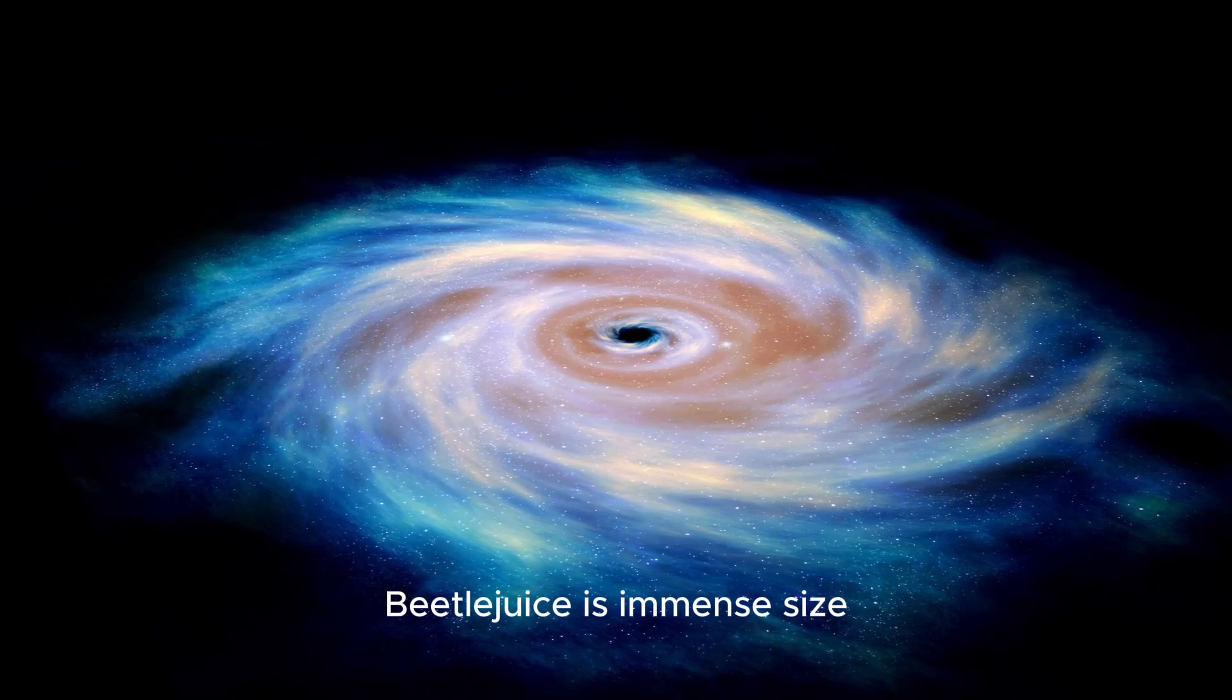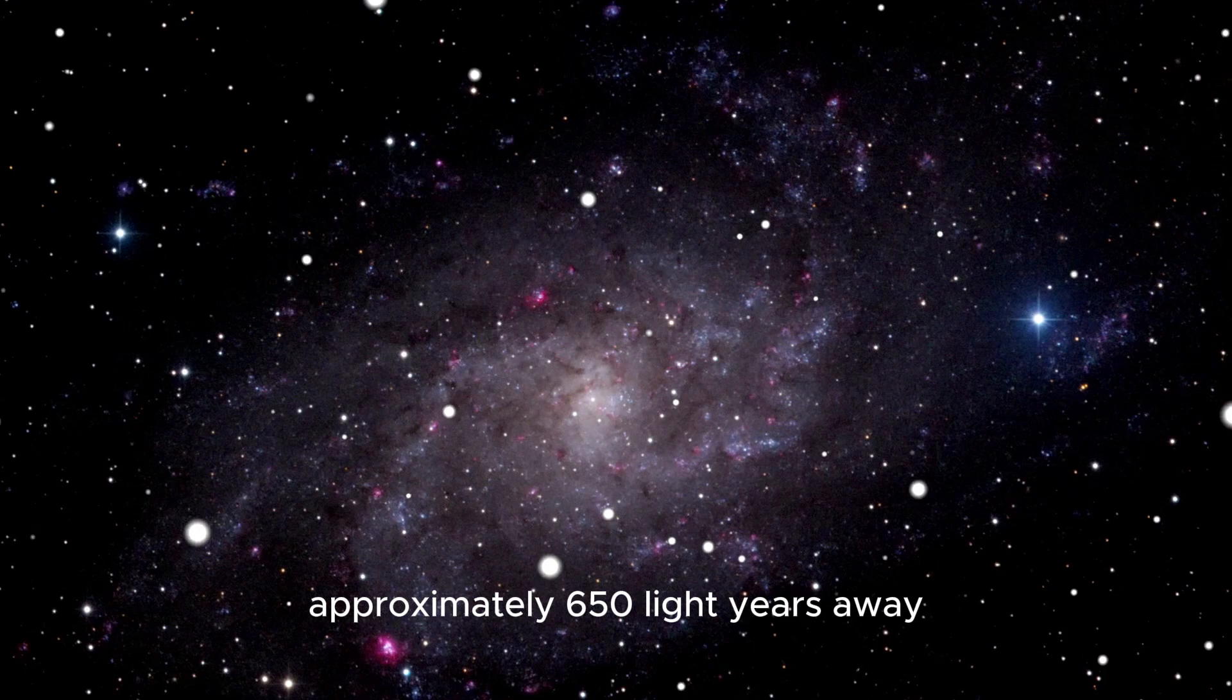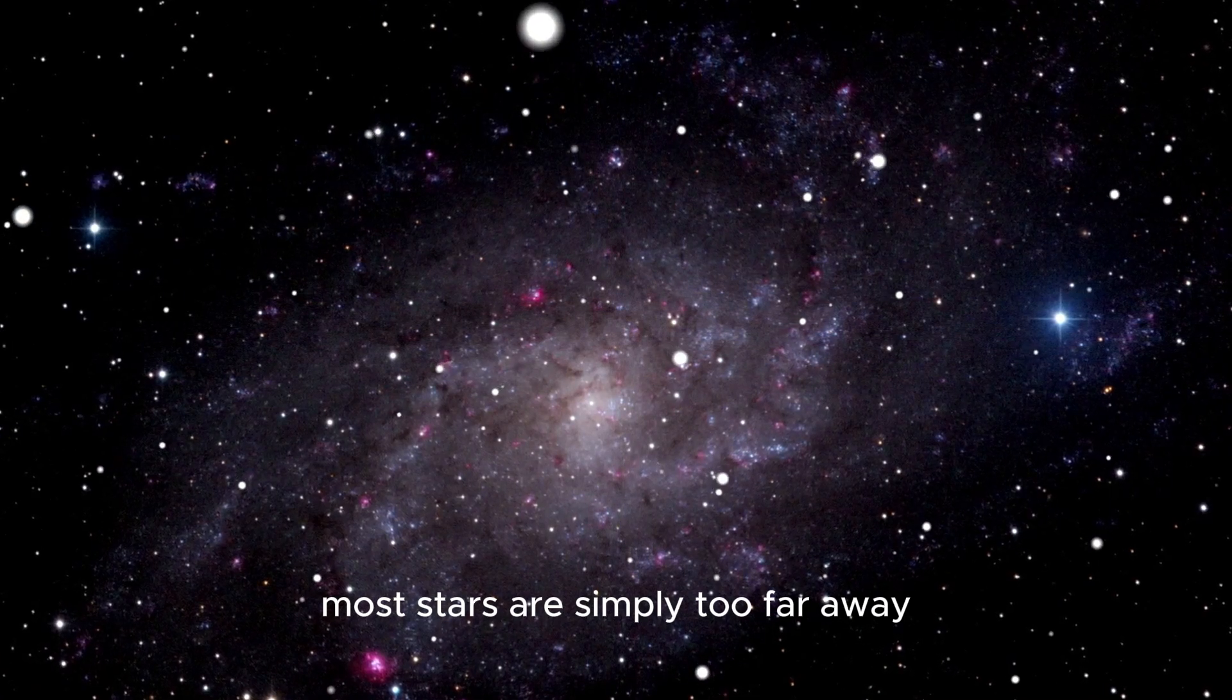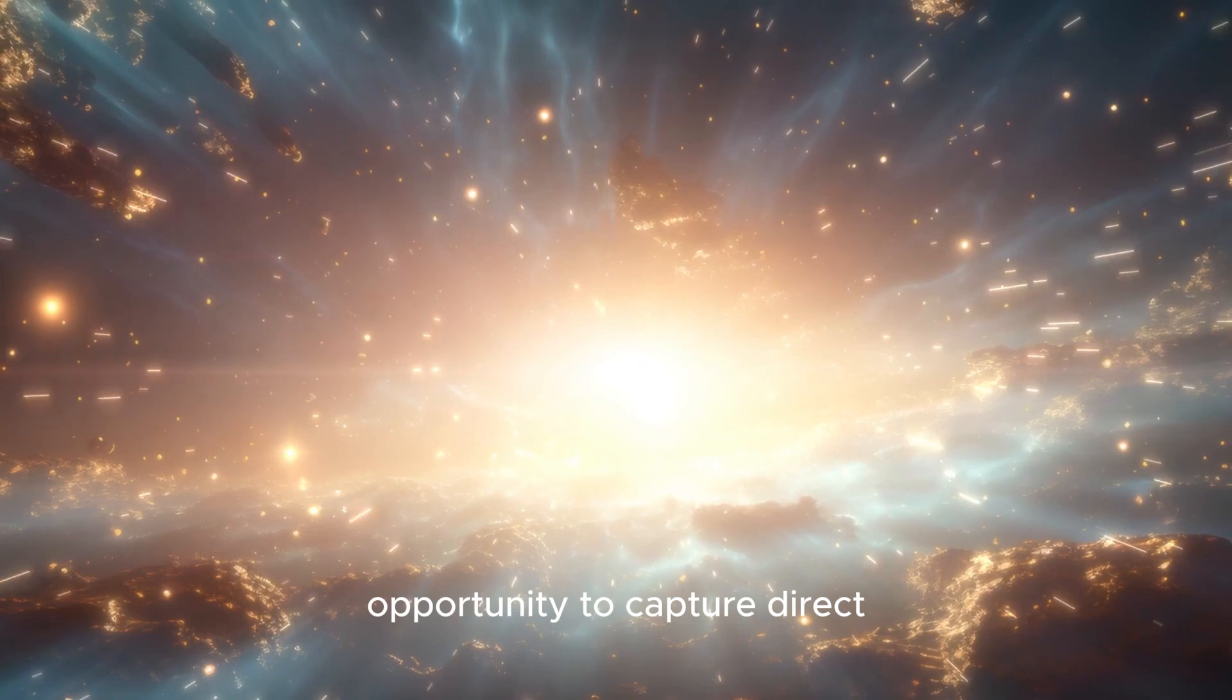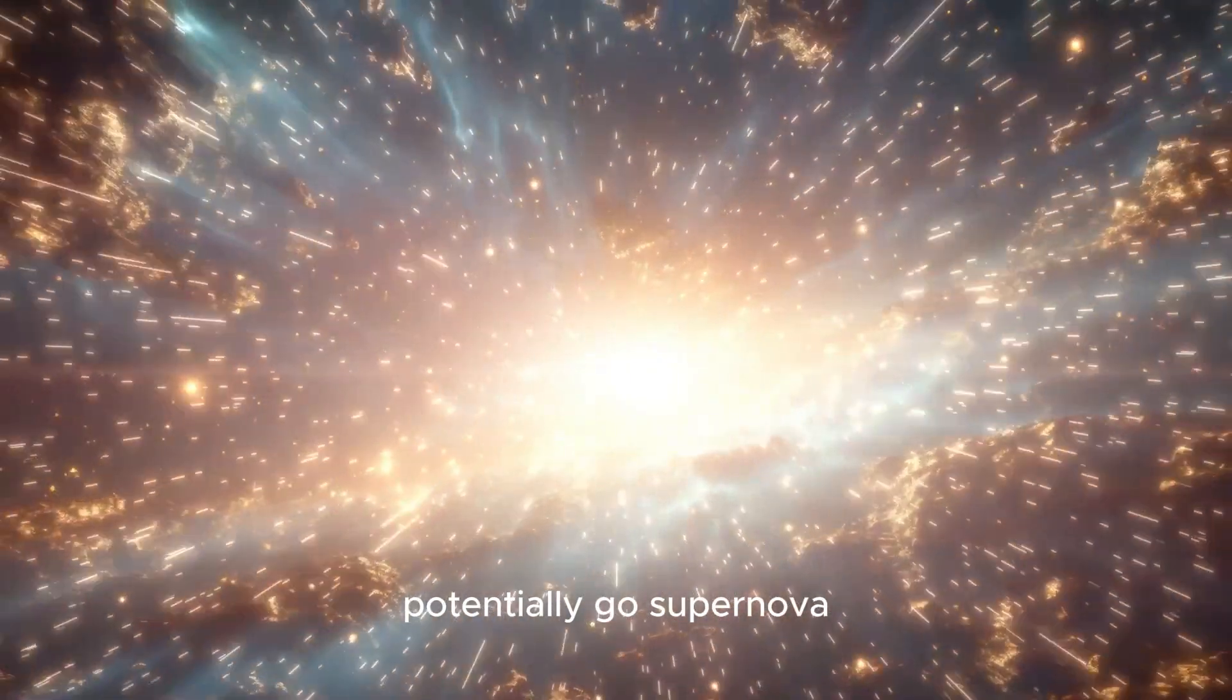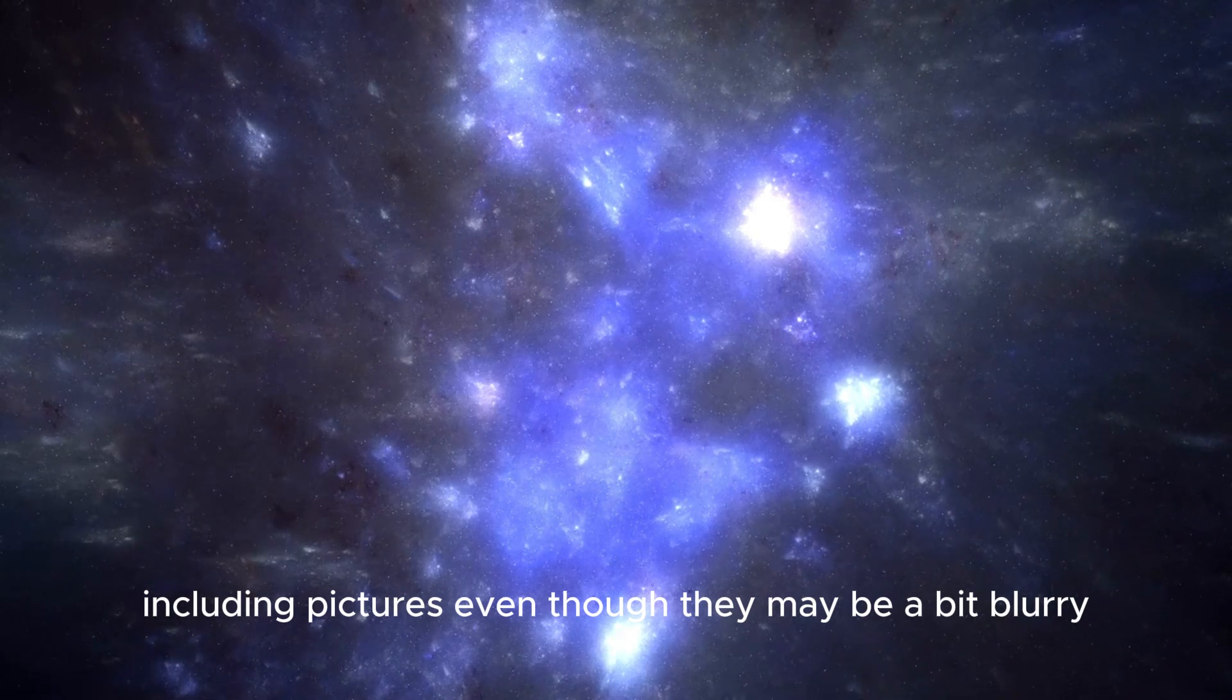Now here's something fascinating. Betelgeuse's immense size and relatively close proximity, approximately 650 light years away, allow us to actually resolve a disk when observing it. Most stars are simply too far away, appearing as mere points of light, but with Betelgeuse we have a rare opportunity to capture direct variations in its light output through photography. So we not only have a star that could potentially go supernova but also plenty of data to collect, including pictures, even though they may be a bit blurry.